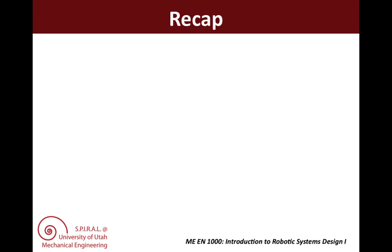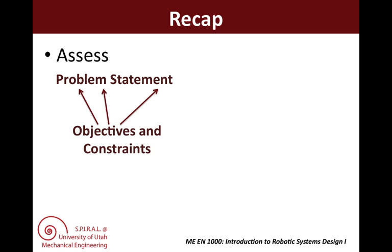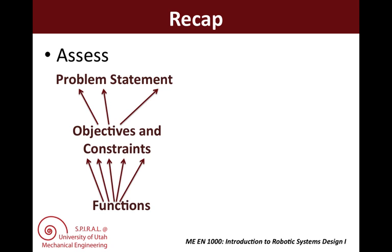First, to recap: in the assess phase you must first develop the problem statement. Once this is well defined, you move on to generate objectives and constraints. You need to make sure that these cover all aspects of your problem statement. The next step is to generate functions. Note that there is not a one-to-one mapping of functions to objectives, because you often need more than one function to accomplish each objective.